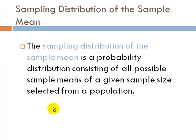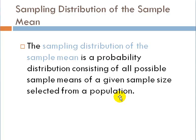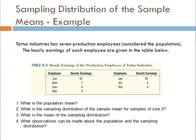First, sampling distribution of sample mean. Sampling distribution of the sample mean is a probability distribution consisting of all possible sample means of a given sample size selected from a population. Sounds very complicated. Let's take a look at an example to understand that definition.